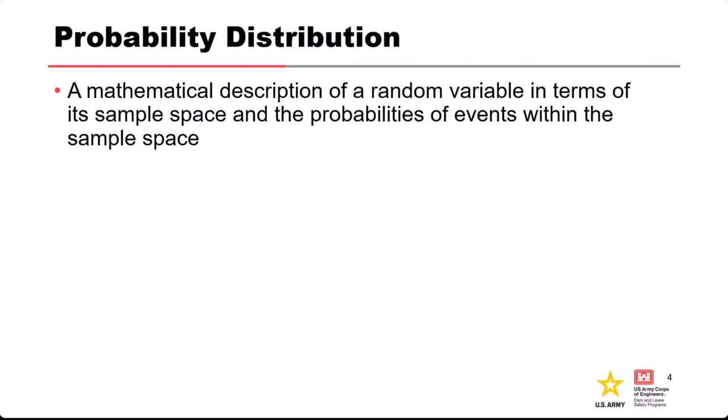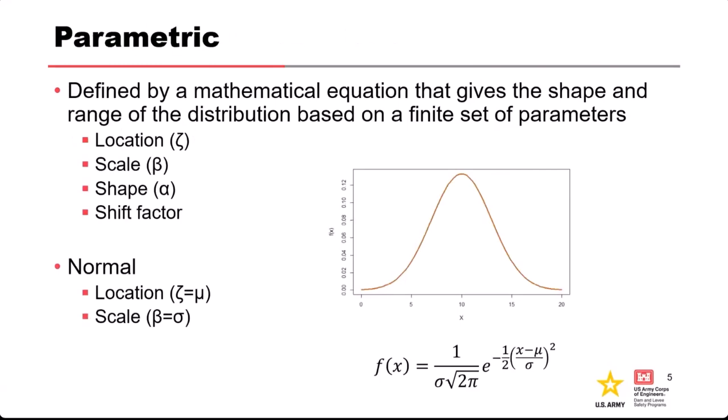So what is a probability distribution? A semi-formal definition would be that it's a mathematical description of a random variable in terms of its sample space and the probabilities of the events or values within that sample space. One common type is a parametric distribution, which means we describe the distribution with a mathematical equation or function that gives us the shape and range based on just a few parameters.